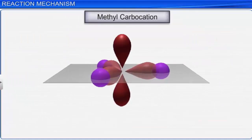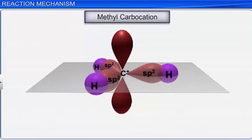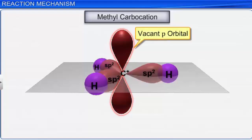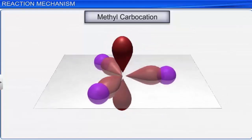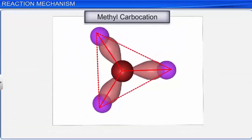In methyl carbocations, three sp2 hybridized carbon orbitals overlap with the 1s orbital of each of the three hydrogen atoms. The remaining 2p orbital of carbon is vacant and lies perpendicular to the molecular plane. Therefore, the shape of the carbocation is trigonal planar.